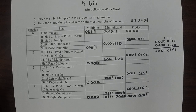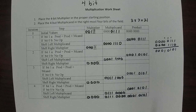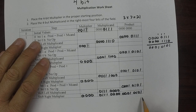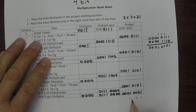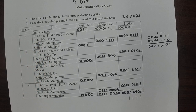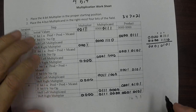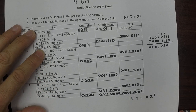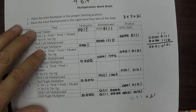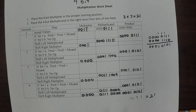Now let's check our answer. This value right here is worth 1, that's worth 4, that's worth 8, and that's worth 16. 16 plus 4 plus 1 — that is equal to 21. And that is our answer.